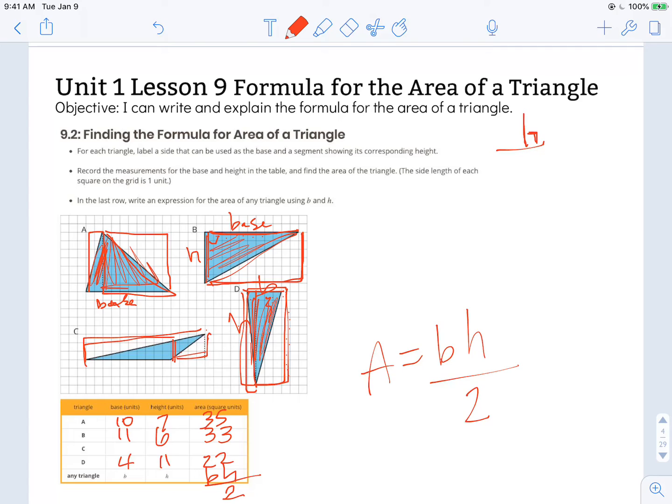Another way we can write that is to say that base times height, you can multiply those together and then find half of that value. And we can use either one of these formulas because they are equivalent, they're just written in a slightly different form.